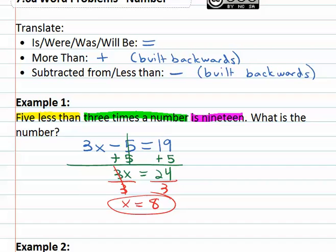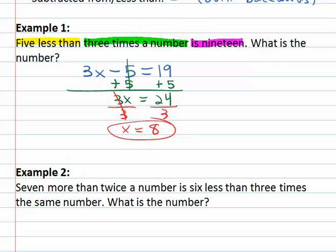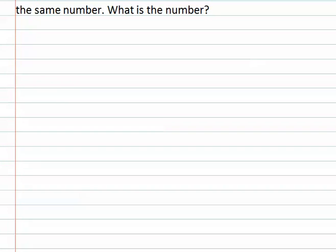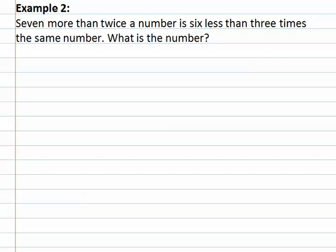Let's try another example where we have to do some translating to end up with our final result. Let's see what we have here. We have seven more than twice a number is six less than three times the same number. Let's break this down.